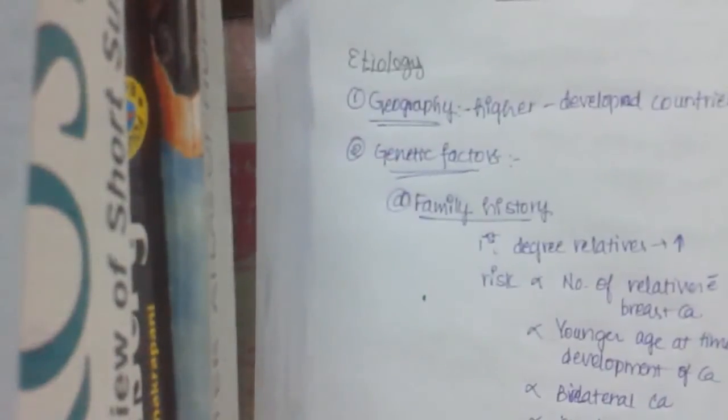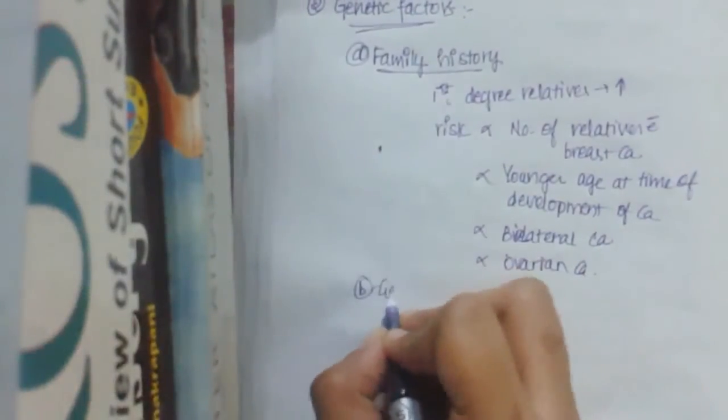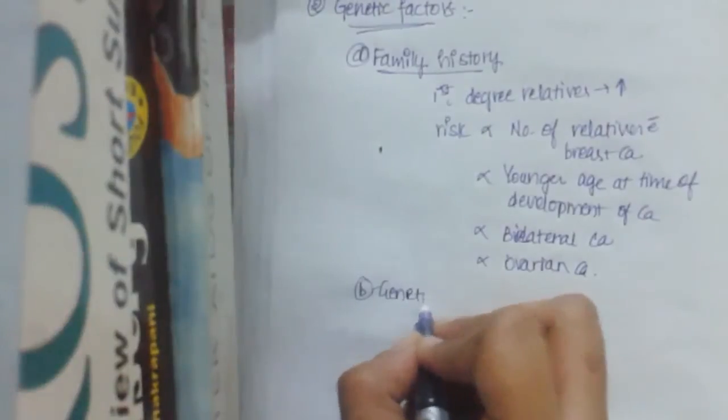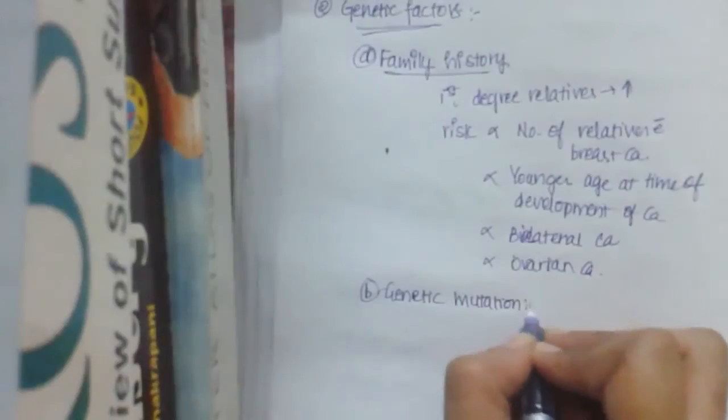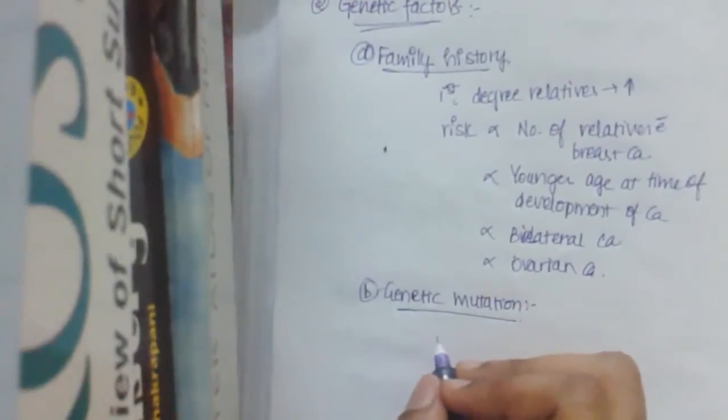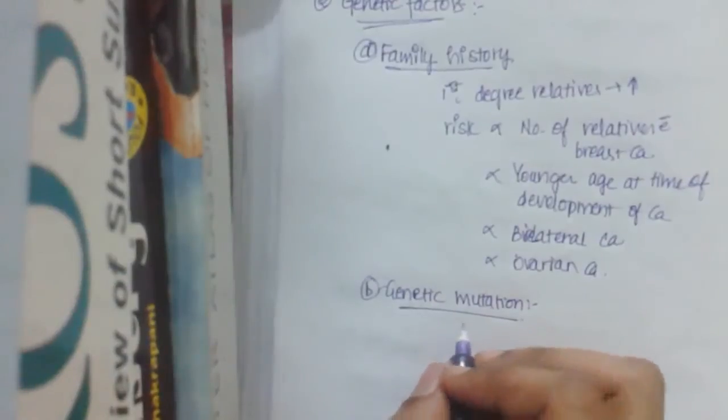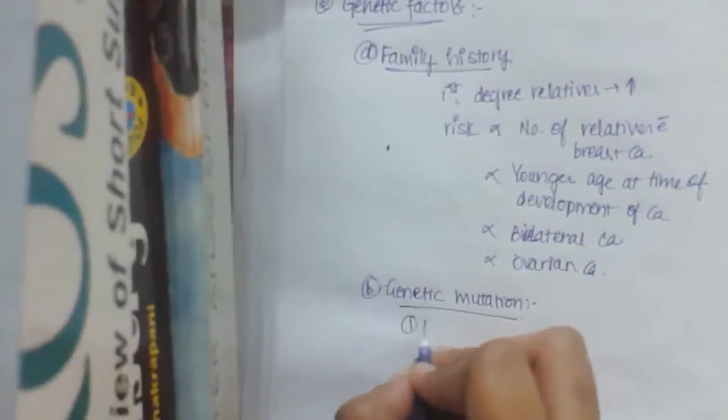And even if there is higher risk if the families have ovarian carcinoma too. This is the family history. Coming to the genetic mutations, what are the genetic mutations which may happen? Ten percent of the whole breast carcinoma are basically due to mutations. Among which the most common one is BRCA1 gene.